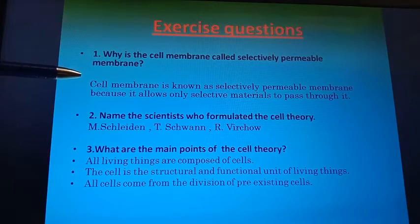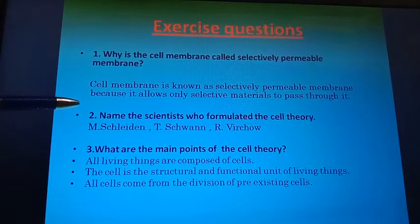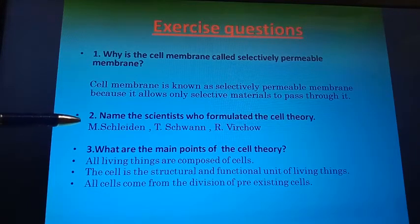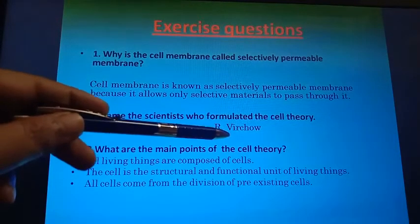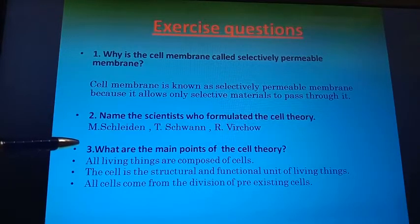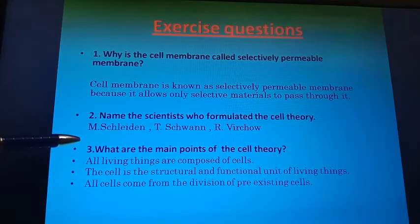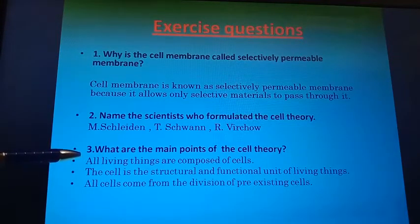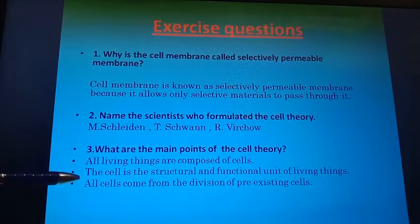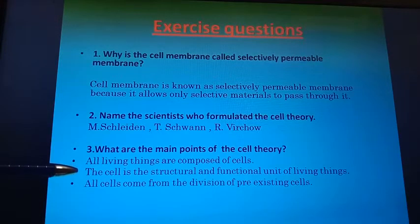The next question is: name the scientists who formulated the cell theory. Three scientists are there: Schleiden, Schwann, and Virchow. The next question is: what are the main points of the cell theory? Three points are there. First, all living things are composed of cells. Second, the cell is the structural and functional unit of living things. Third, all cells come from the division of pre-existing cells.